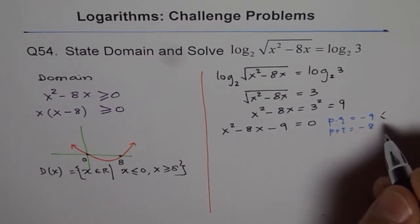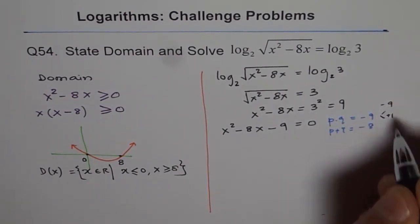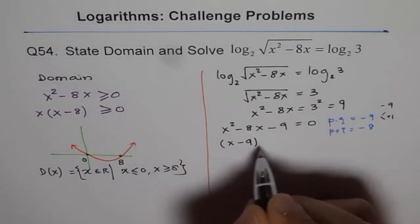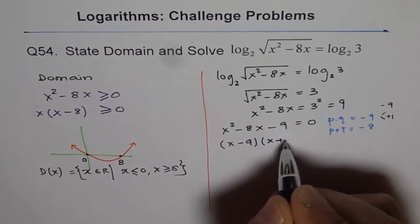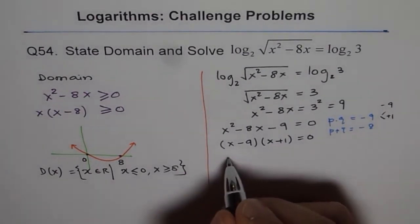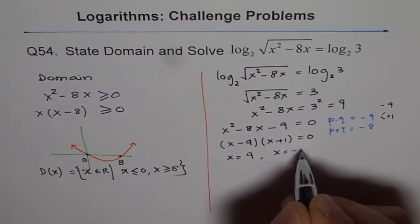So, the two magic numbers for us are minus 9 and plus 1. So, we can factor this as x minus 9 times x plus 1 equals 0. So, that gives us two solutions. One is x equals 9 and the other one is x equals minus 1.